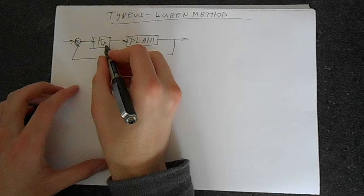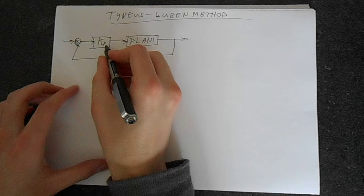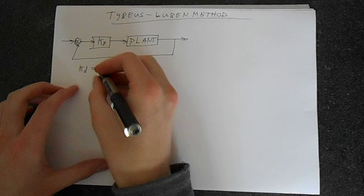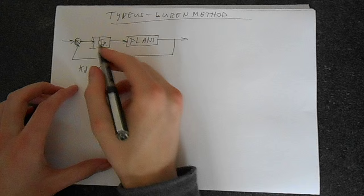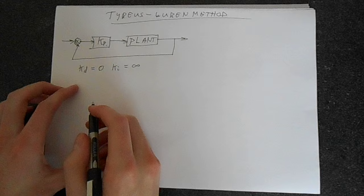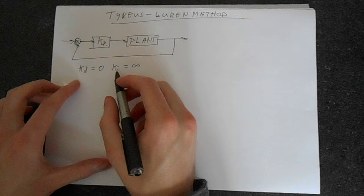This is a PID controller here with KD equal to zero and KI equal to infinity. If you look at the transfer function for a PID controller and substitute these gains in, you'll get KP on its own. We've set KD to zero, the derivative gain, and the integral gain we've set all the way up to infinity.